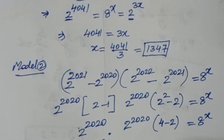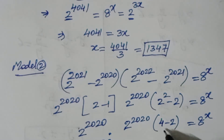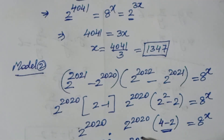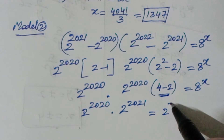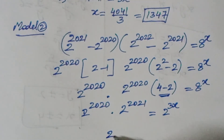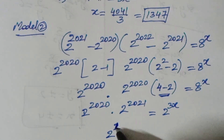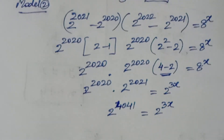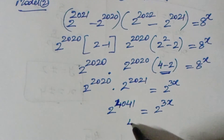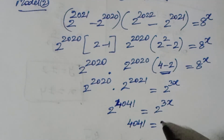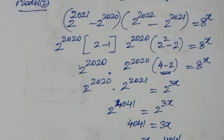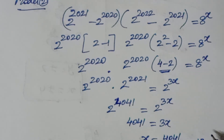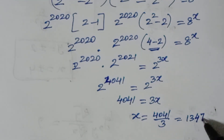So 2 to the power of 2020 multiplied by 2 to the power of 2021 gives 2 to the power of 3x. Adding the exponents: 2 to the power of 4041 equals 2 to the power of 3x. Since the bases are equal, 4041 equals 3x, so x equals 4041 divided by 3, which gives 1347.